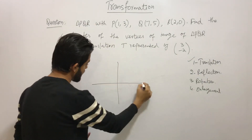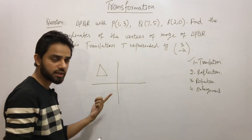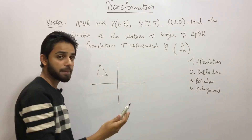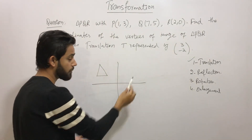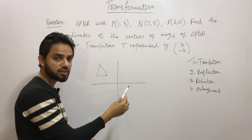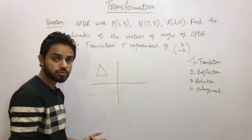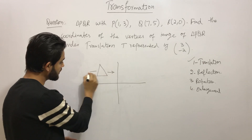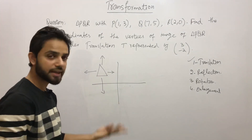Imagine this is your XY plane, and on this plane we have a triangle — let's say triangle ABC, naming the vertices. I can move this triangle to the right side. It depends on how much I am moving or translating it. I can move it two units to the right, or three, or four, and so on. I can also move it down, or up, or to the left-hand side.